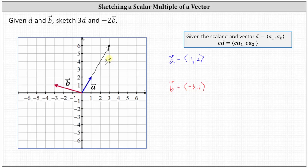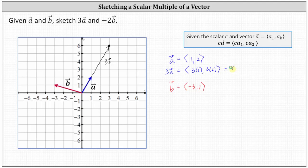Notice it has three times the magnitude and points in the same direction. Another way to find the component form of three times vector a is to multiply the components of vector a by the scalar three. So the x component is three times one and the y component is three times two, simplifying to an x component of three and a y component of six, which matches the vector we already sketched.